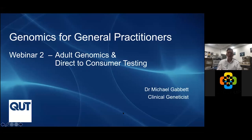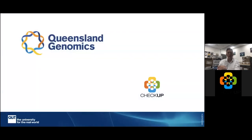Tonight is the second of three lectures in this series. We're looking at adult genomics and direct-to-consumer testing, and we'll look at the theory behind consent required for DNA testing as well. This follows on from our first lecture on prenatal and paediatric testing, and the last lecture in the series will be on cancer genomics.